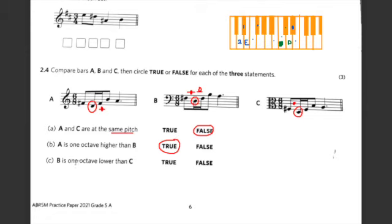And finally, B is one octave lower than C. So they're saying that this note here is one octave lower than C. Well, middle C is up here and it seems to be a seventh from that D.